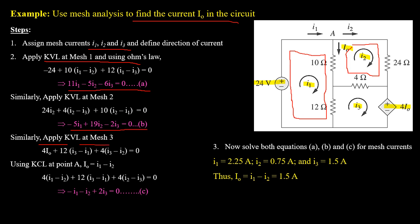Applying KVL at mesh 3: 4i0 plus 12(i3 minus i1) plus 4(i3 minus i2) equals 0. Applying KCL at point A gives: small i1 equals small i2 plus capital I0, so capital I0 equals i1 minus i2. Substituting this into the mesh 3 equation, we replace 4i0 with 4(i1 minus i2), and on simplification we obtain: minus i1 minus i2 plus 2i3 equals 0, which is the third equation.